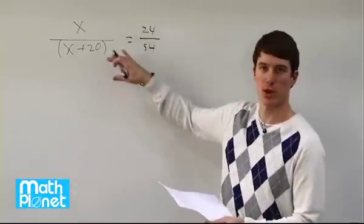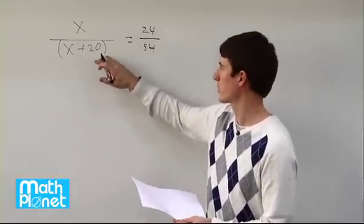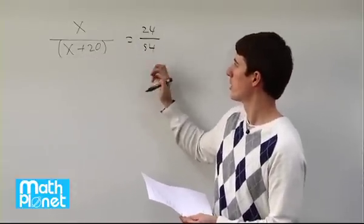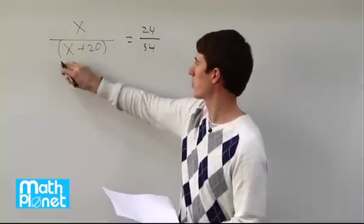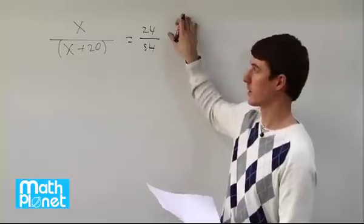So we have some strange fractions here, these rational expressions on either side. To get rid of these divisions that we don't want to deal with anyway, we can do cross multiplication and put the 54 here and this quantity here.